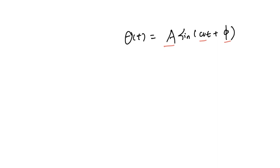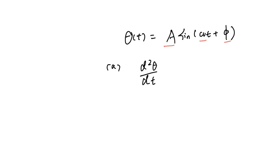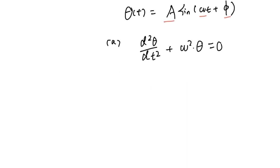For the first part of our question, we are required to check — using this notation — that the second derivative of theta with respect to t, plus omega squared times theta, is equal to zero. To check this equation, we need to compute the derivative of theta.